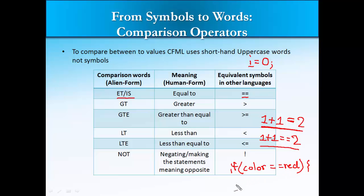You can replace the double equals sign with the keyword EQ or IS. These mean the same thing as double equals. You won't find these comparison words in other programming languages, but you will find the equals symbol. This is unique to ColdFusion. If you use EQ, remember both letters must be uppercase. So you can write color EQ red, which produces the same result as the double equals sign.